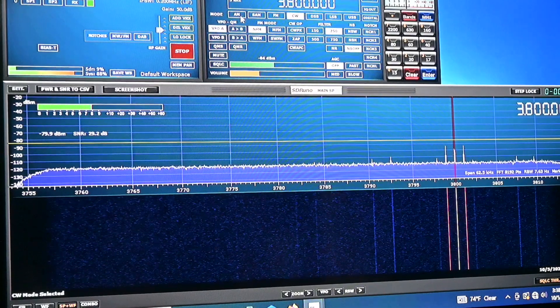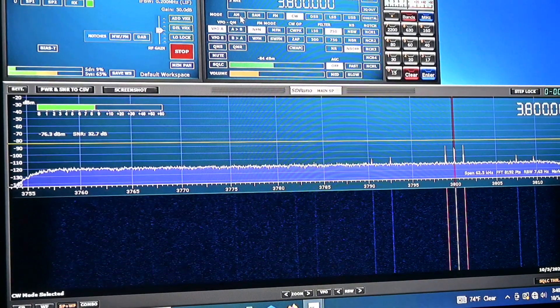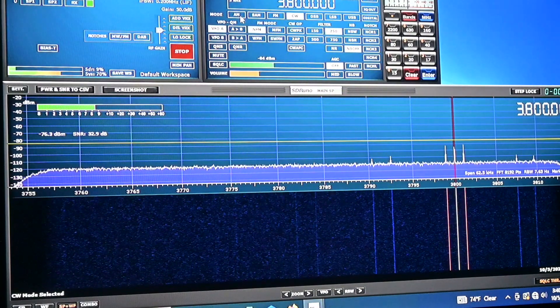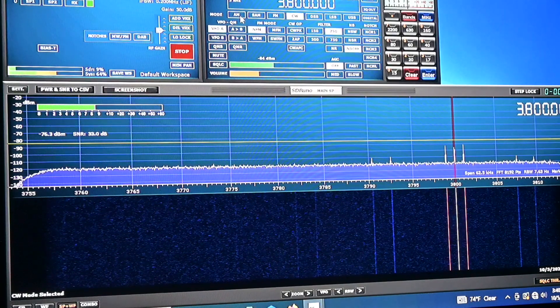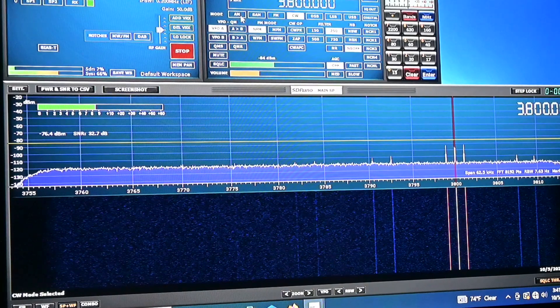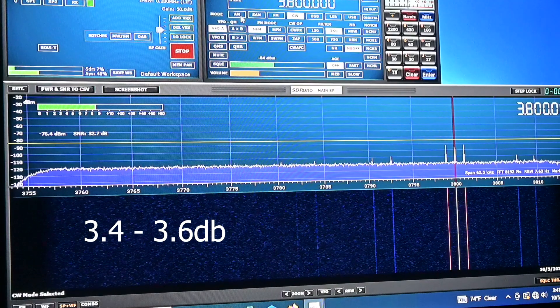Now let's go put the cap in line and see what our change is like. Now this is our signal that we're receiving with the capacitor inserted and the signal we're receiving now is minus 76.3 decibel milliwatts. So what we're seeing with inserting the capacitor in line is a gain of 3.6 dB.